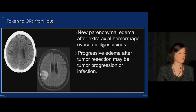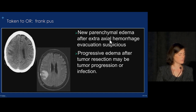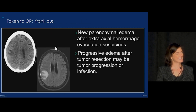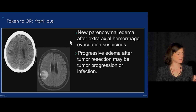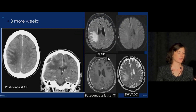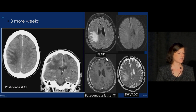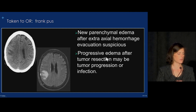If you see new parenchymal edema after an extra-axial hematoma resection, you have to think about abscess. Similarly, if we see progressive edema after a tumor resection, it might be abscess, but it may also be tumor progression.